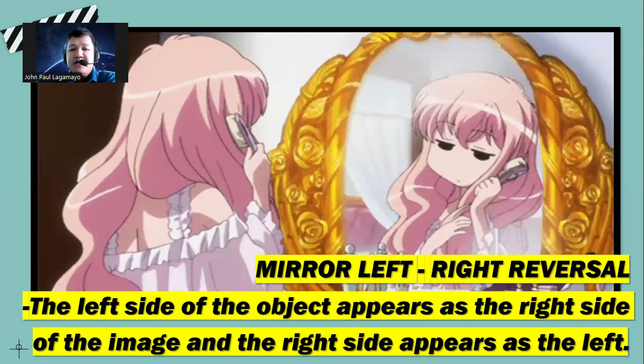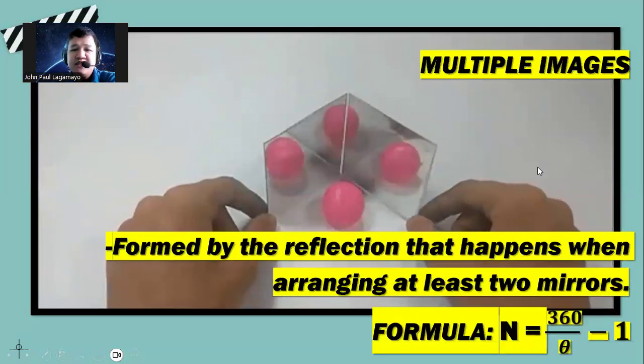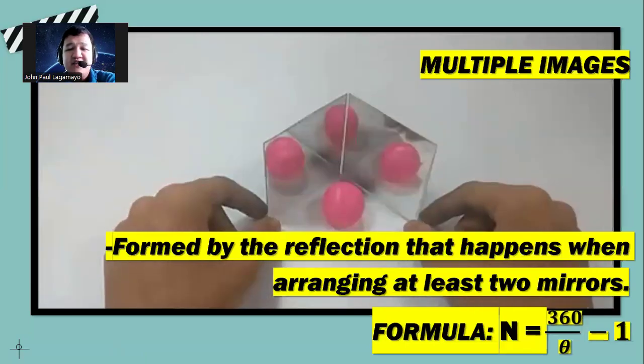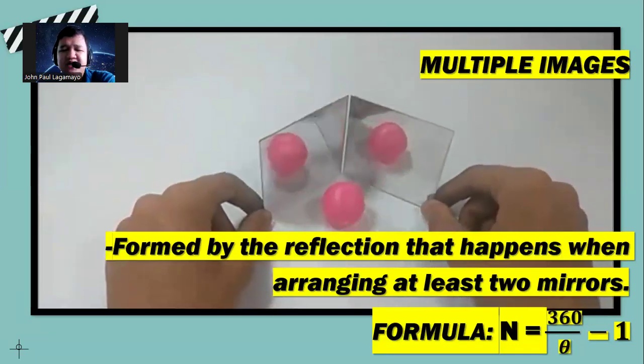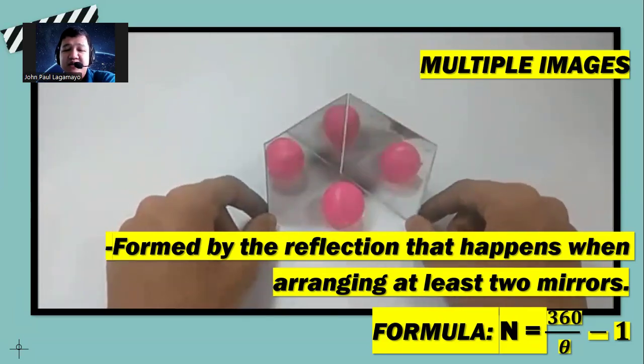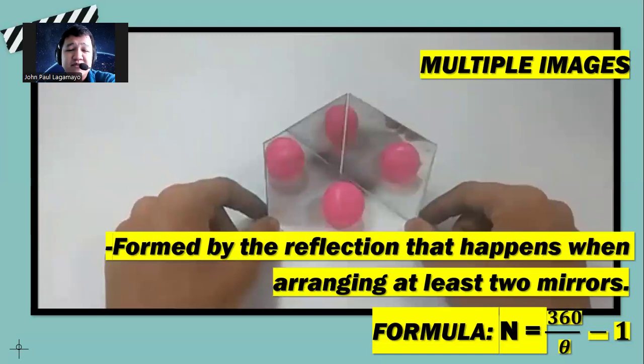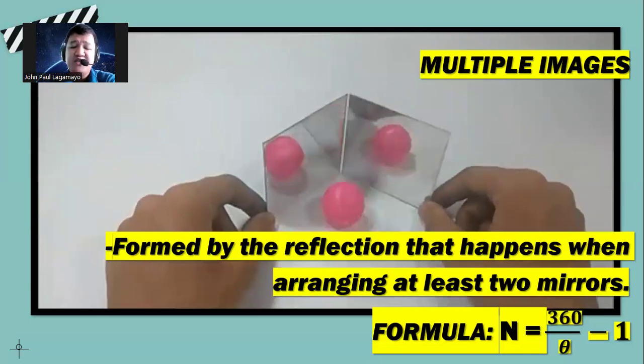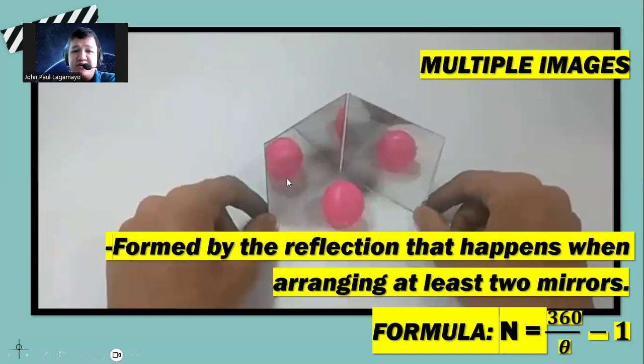Let us talk about multiple images. Multiple images can be created in a particular instance wherein you use two square or rectangle mirrors, and depending on the angle you can produce a certain number of images that are dependent on the angle. The formula for this is: number of images equals 360 degrees divided by the angle theta minus one. So meaning to say, in this example, if we try to arrange that into 45 degrees, 360 divided by 45 degrees minus one would equal to seven images, and you can see here there are seven images.